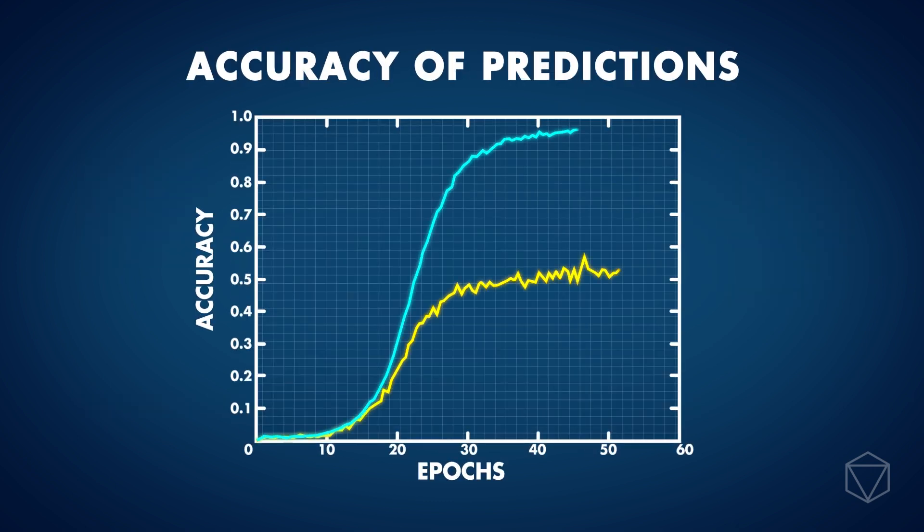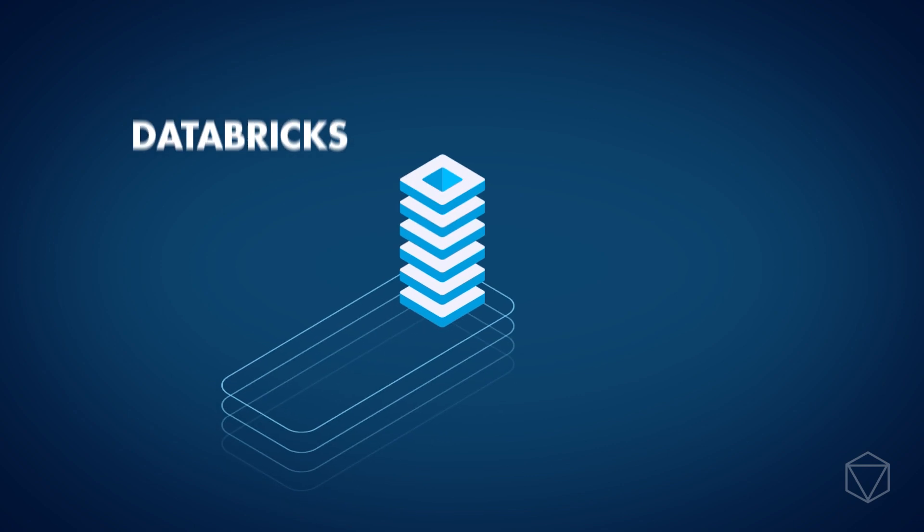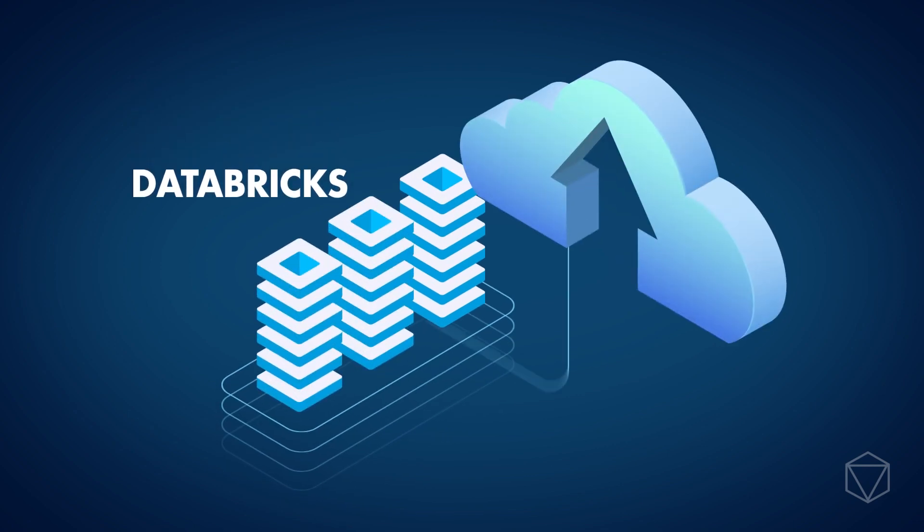We found that it was possible to get the accuracy up to around 50%. To improve the accuracy further, we moved the CNN into the cloud and began training on Databricks.